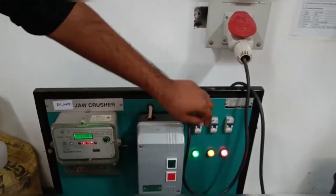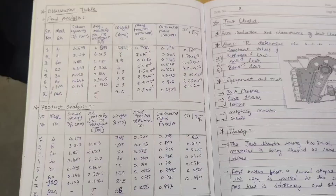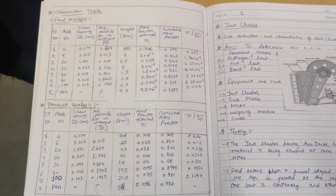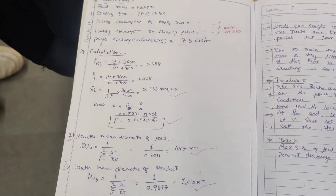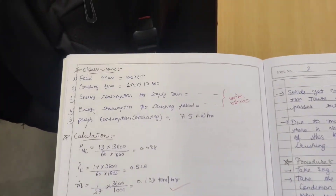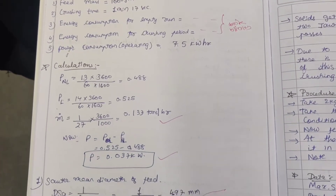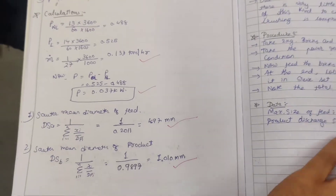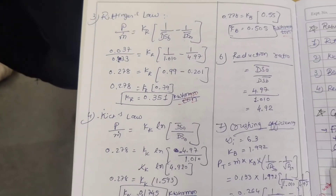After switching the crusher off, we perform product analysis. Draw the observation table for feed and product analysis and calculate the Sauter mean diameter for both. After calculating, proceed to calculation, as we now have the values of power and mass flow rate.